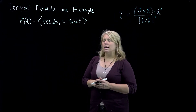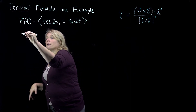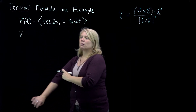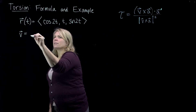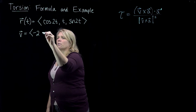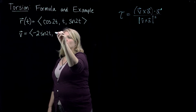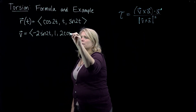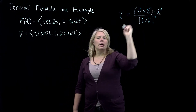We're going to calculate torsion on this curve — it's fairly straightforward here, though I do have another video with a more complicated example. So v is the derivative, and you do need to be a bit careful with the chain rule. That gives v equals negative 2 sine 2t, 1, and 2 cosine 2t.